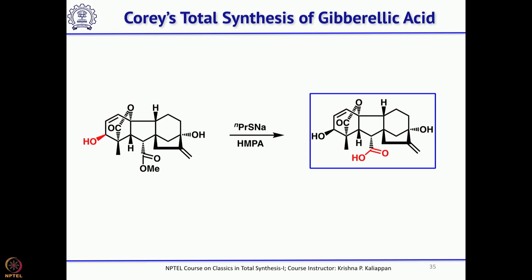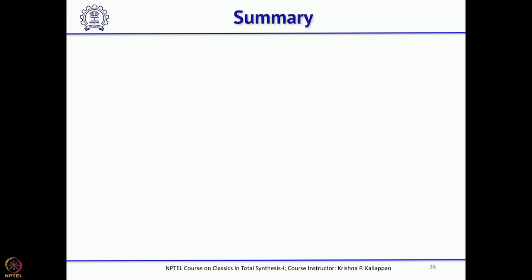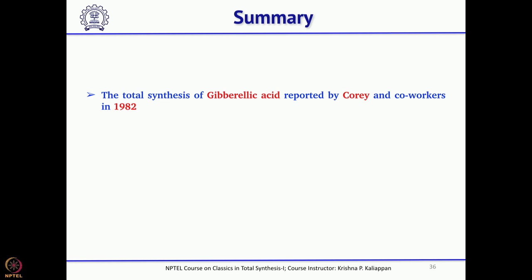Then the methyl ester — the hydrolysis of the methyl ester is quite difficult because it is very unstable; as soon as the carboxylate is formed, it is quite unstable. So he had to use sodium thiopropylate to hydrolyze the methyl ester and get the natural product. This is how E.J. Corey successfully accomplished the total synthesis of gibberellic acid.